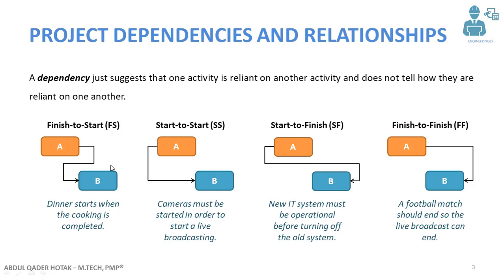There are four types of relationships: Finish-to-Start, Start-to-Start, Start-to-Finish, and Finish-to-Finish. Activities linked as Finish-to-Start mean that when the predecessor activity finishes, the successor activity can begin. For example, dinner starts when the cooking is completed.